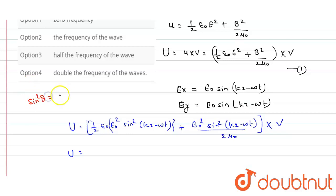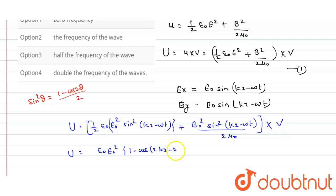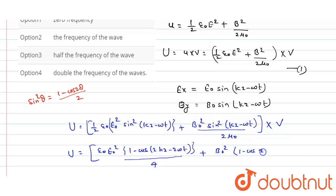Applying this identity, U becomes: epsilon naught times E naught squared times (1 minus cos(2kz minus 2 omega t)) divided by 4, plus B naught squared times (1 minus cos(2kz minus 2 omega t)) divided by 4 mu naught, multiplied by V.